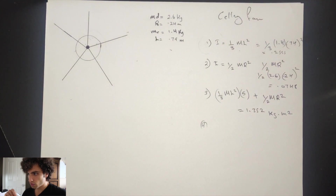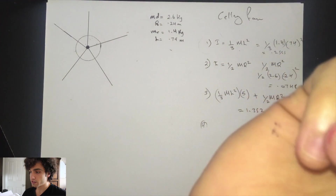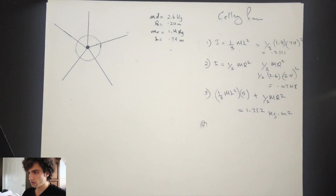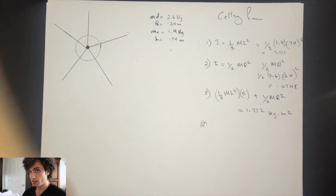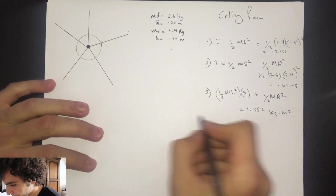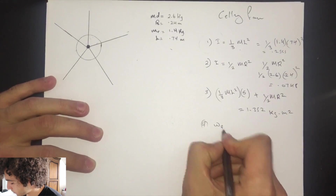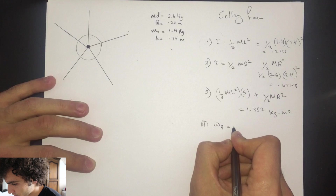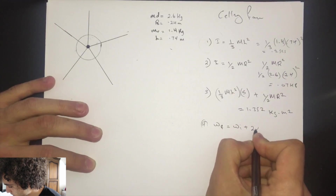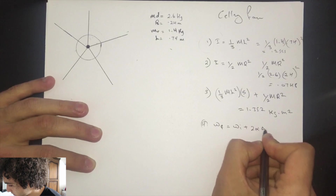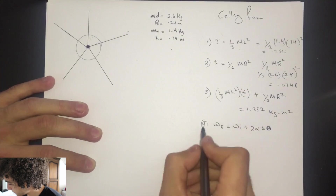Number four: when the fan is turned on, it takes 3.5 seconds and a total of 17 revolutions to accelerate up to full speed. What is the magnitude of the angular acceleration? We're going to use the rotational kinematic equation: omega final squared equals omega initial squared plus two times angular acceleration times delta theta.